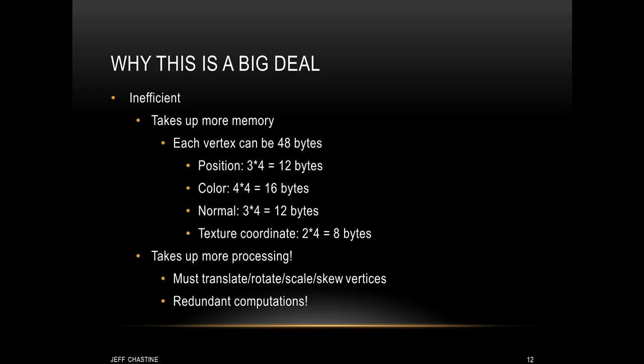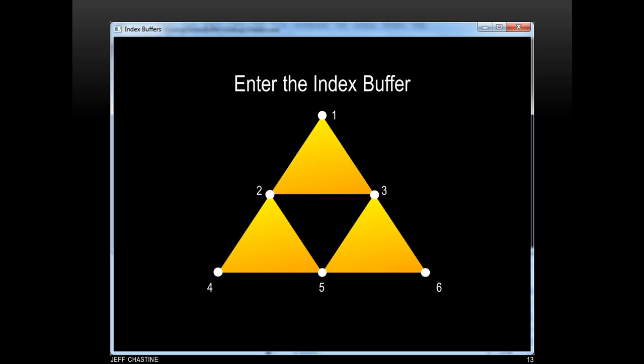Also, you have to understand that because there's so much redundancy, it's going to take up more processing power. Think about what we had in the previous example. We're going to have to do mathematical operations like translation and rotation, and we need to do that for every vertex that we have. And therefore, when we specify more than one vertex in exactly the same position, we have redundant computations. This is exactly the reason that we have an index buffer.